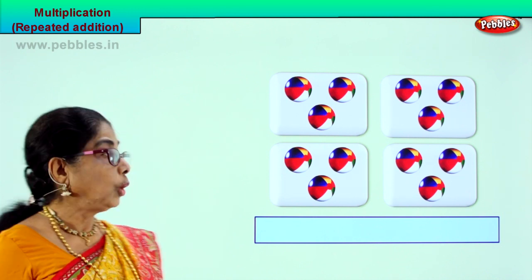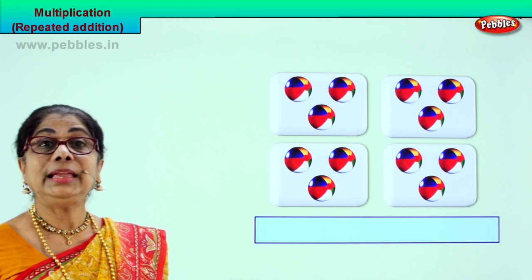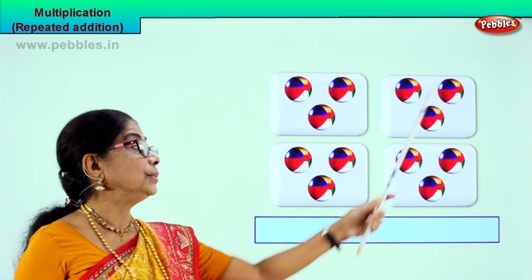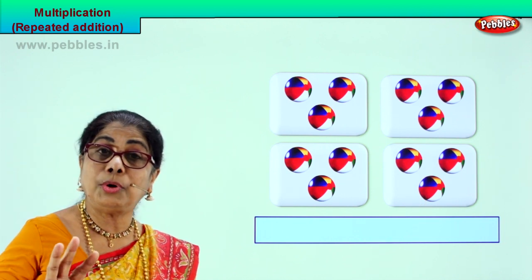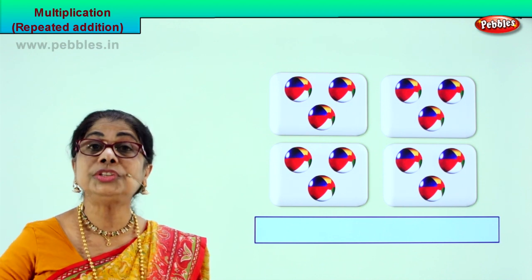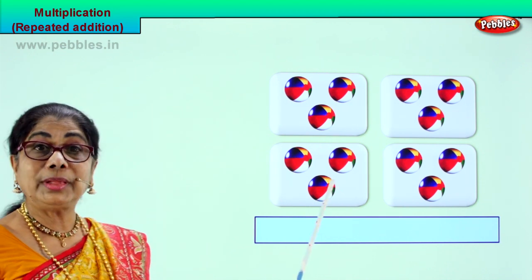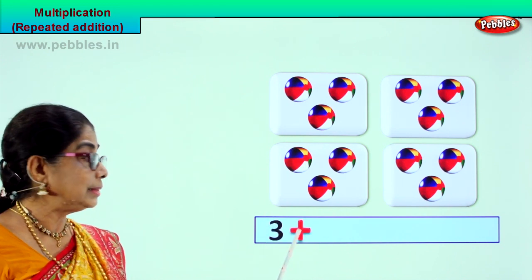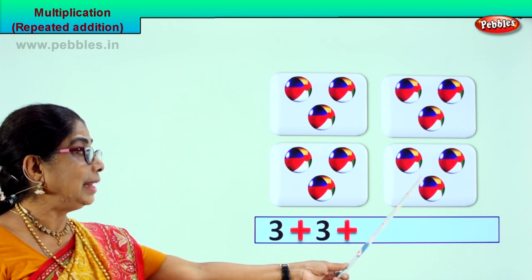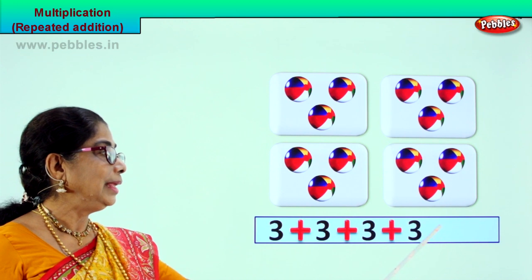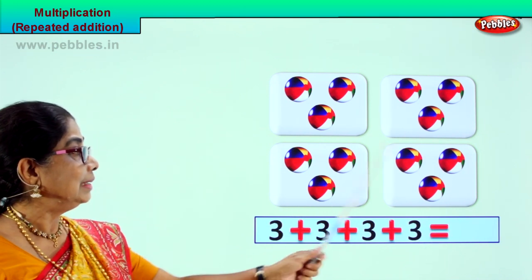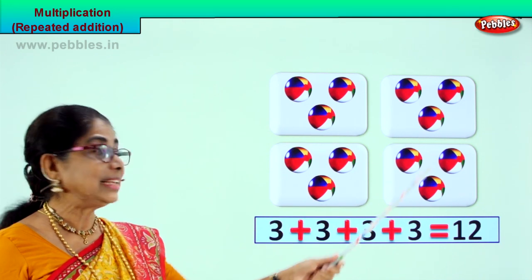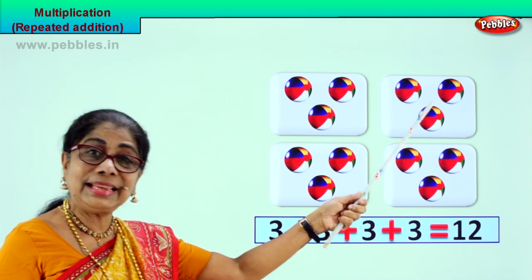Look at this. Now we have here again four boxes. In each box there are balls. Let's count. One, two, three. One, two, three. One, two, three. One, two, three. There are three balls in each of the boxes. How many boxes? Four boxes. So we write: three plus three plus three plus three equal to how many? Three, six, nine. Answer? Twelve.